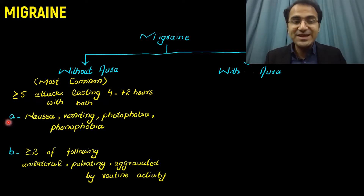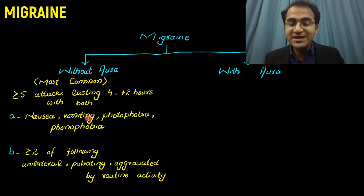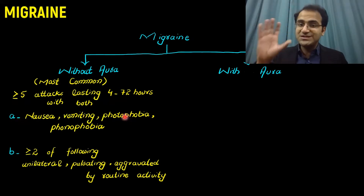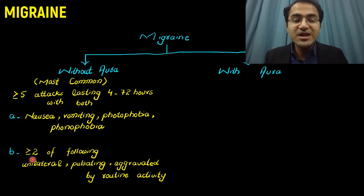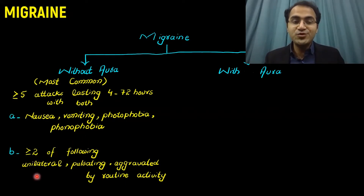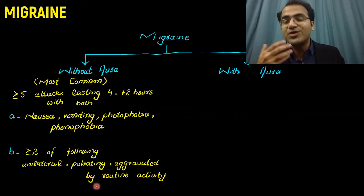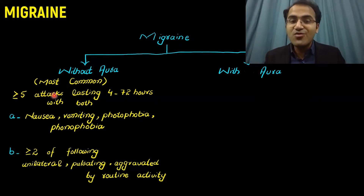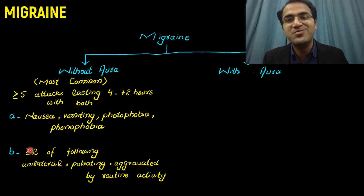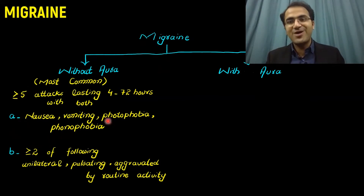The features in A include nausea, vomiting, photophobia, phonophobia, and sensitivity to sounds. Features in B include greater than or equal to two of the following: unilateral pulsating headache aggravated by routine activity. So migraine without aura is the most common type with five or more attacks having both features present in A and B.